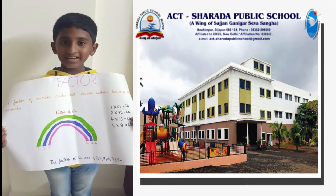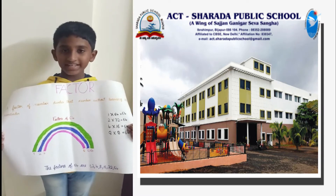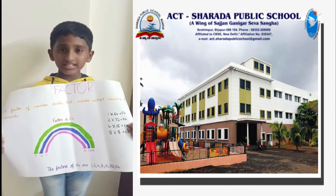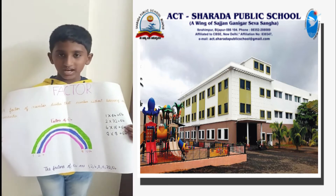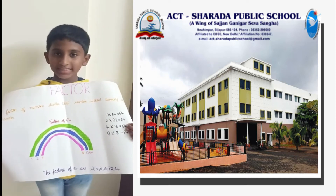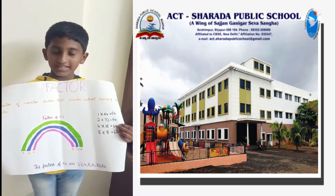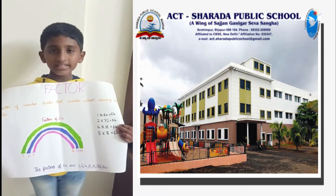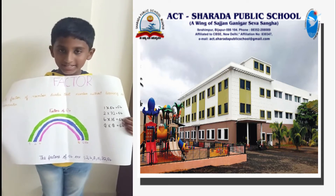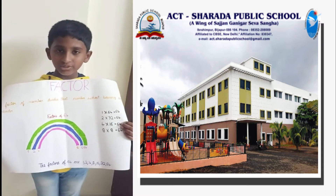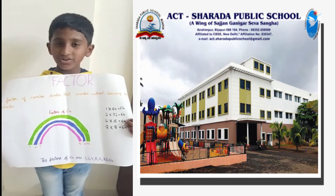A factor of a number divides that number without leaving any remainder. Factors of 64: 1 × 64, 2 × 32, 4 × 16, 8 × 8. The factors of 64 are 1, 2, 4, 8, 16, 32 and 64. So this was my video on factors.